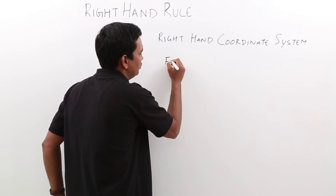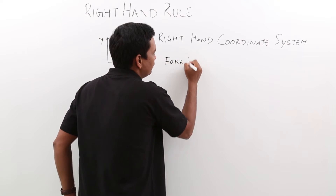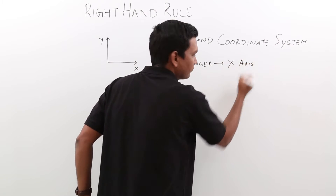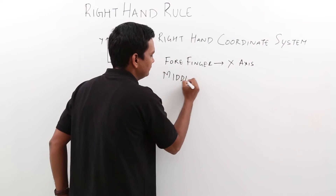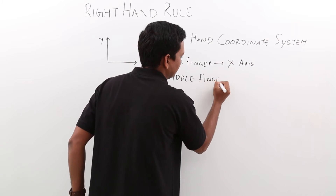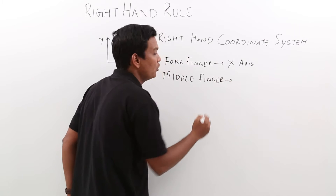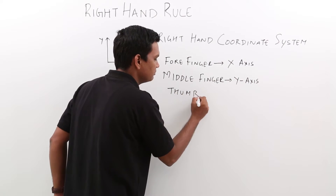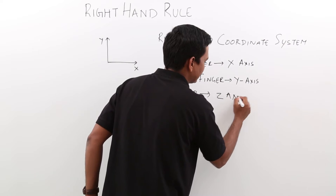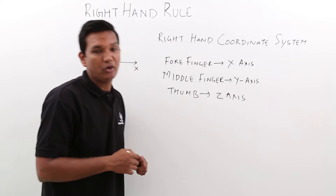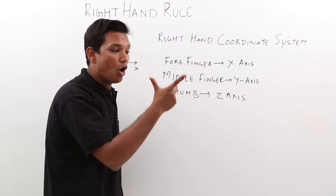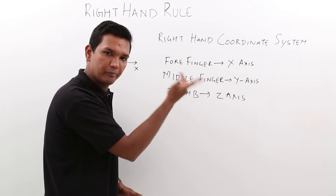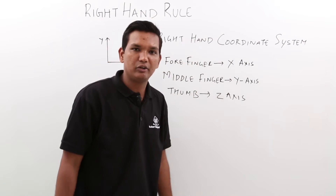So your forefinger points in the direction of x, middle finger in the direction of y, and thumb in the direction of z. This is what is called the right hand coordinate system. Remember, all three have to be perpendicular to each other. So we have understood the right hand coordinate system.